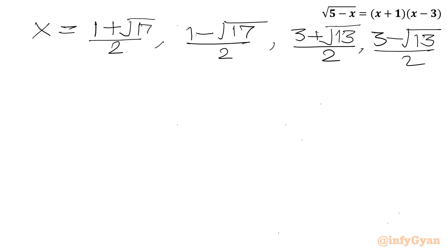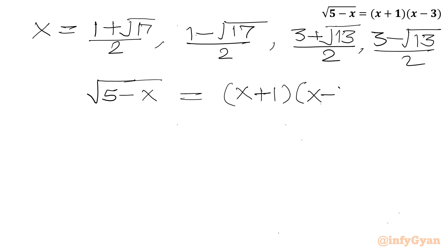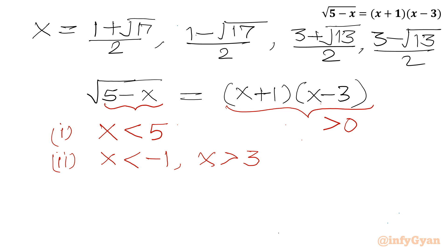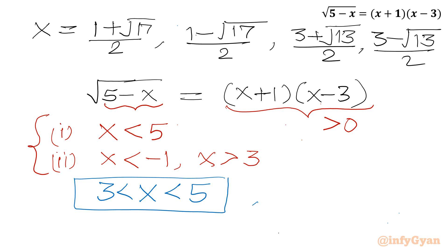Now let us consider conditions on x from our original equation. From the left-hand side, the radicand must be non-negative, so x must be less than 5. From the right-hand side, the product must be positive for real solutions, so x must be less than negative 1 or x must be greater than 3. Taking the intersection, x must lie in the interval (3, 5) or x must be less than negative 1.